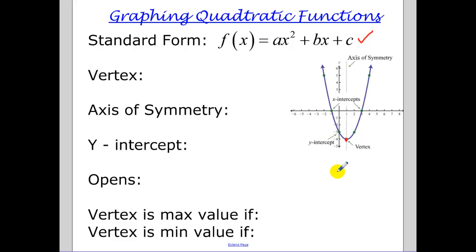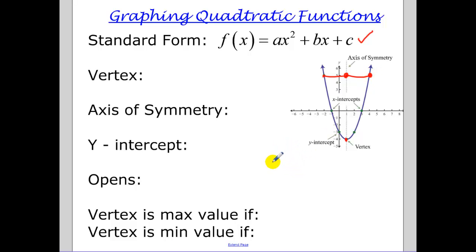Quadratic functions are symmetric across the axis of symmetry, meaning the distance from a point to the axis of symmetry is the same on both sides. The axis of symmetry is a line, and we find that line by computing negative b over 2a.